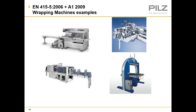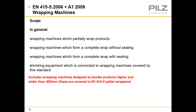EN 415 part 5 covers wrapping machines, with examples including continuous low wrappers, high-speed wrappers, tray wrappers with heat shrink tunnel, and horizontal wrappers. It is important to note that part 5 only covers wrapping machines designed to handle products less than 400 millimeters.